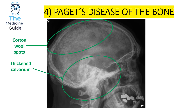This is an example of Paget's disease of the bone — specifically Paget's disease of the skull. There aren't many skull x-rays you need to be familiar with as a medical student, but Paget's disease is one of them. These patients classically present with a thickened calvarium and cotton wool spots. The most easily identifiable feature on a skull x-ray is the thickened calvarium, so keep your eyes peeled for that in exam questions.